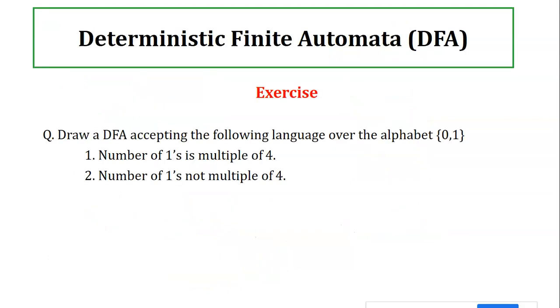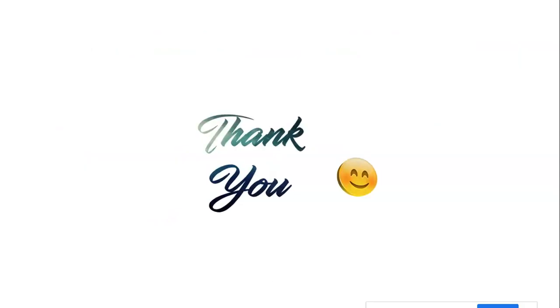As an exercise, try designing DFAs for: number of ones is a multiple of four, number of ones is not a multiple of four, number of zeros is a multiple of four, and number of zeros is not a multiple of four. In the next session we'll have more examples on DFA. Keep watching — thank you so much!